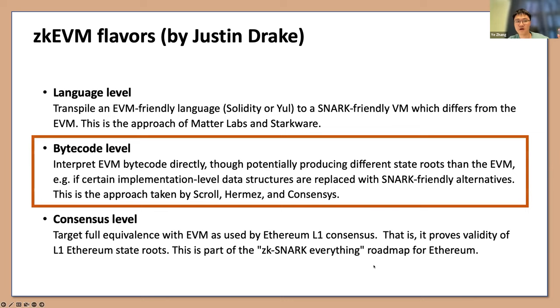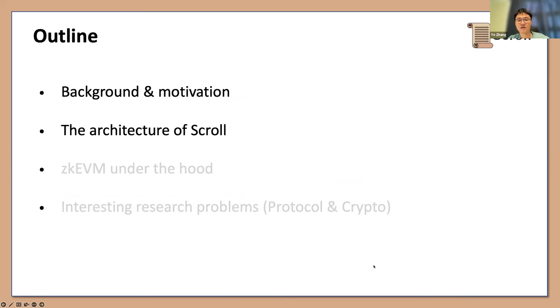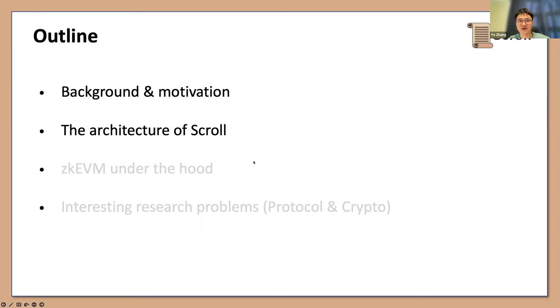Finally, there is consensus level, which is really hard because you need to reach Ethereum equivalence — not just EVM equivalence on the execution side, but exactly the same implementation as Ethereum itself, achieving the goal of SNARKing everything and SNARKing the blockchain. We are at the middle second level, and now I'll go through the architecture of Scroll and then move to the ZK part.